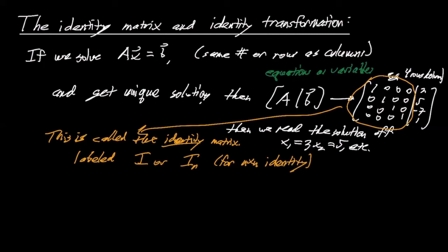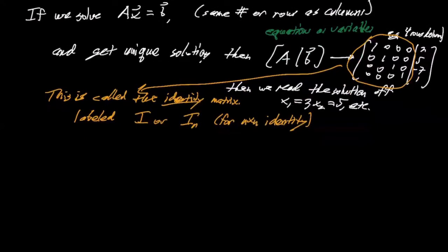And right, so it's just the description is it's ones along the main diagonal, zeros everywhere else.